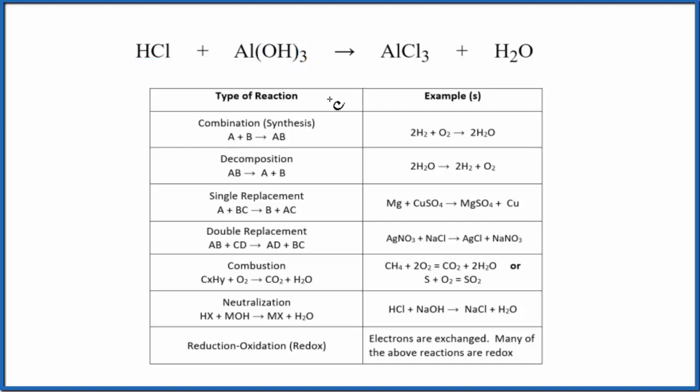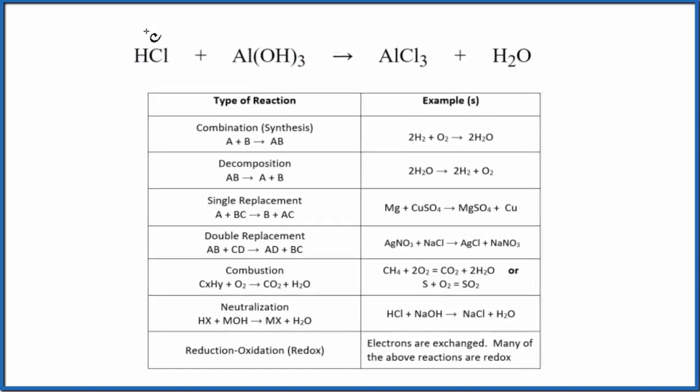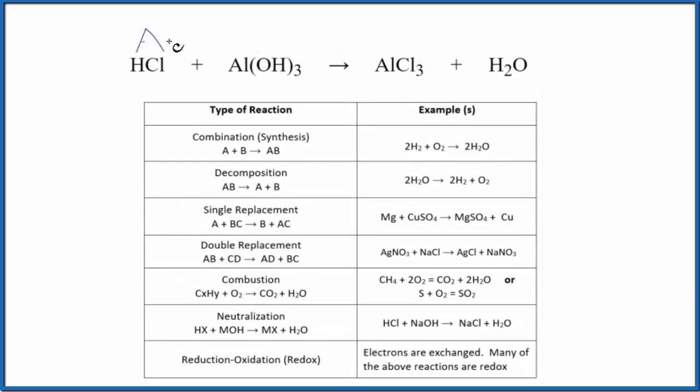The first thing we should notice is that hydrochloric acid, HCl, we have this H in front. This is an acid, probably a good one to remember. Then we have this OH. This is the hydroxide group. It's bonded to a metal. So this here is going to be a base.